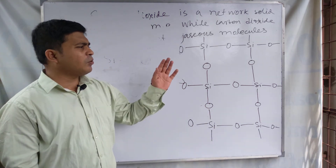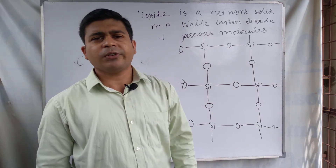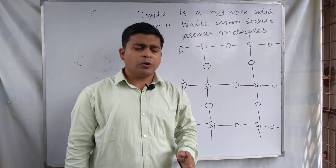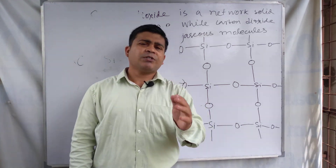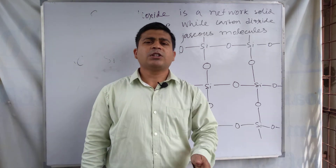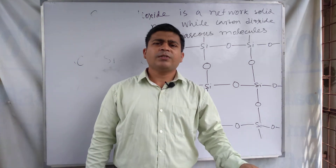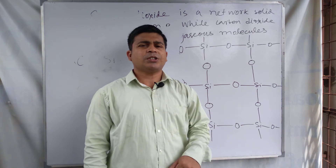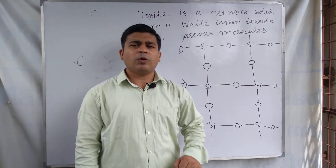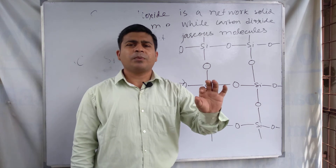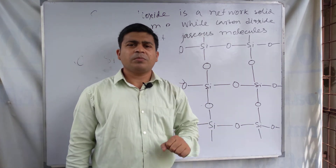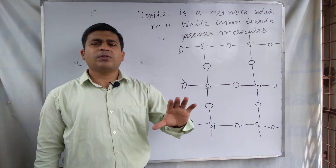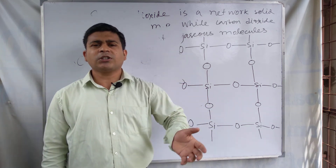This is the discussion about the structural differences between carbon dioxide and silicon dioxide. You can also write the same answer for the question: what are the differences between the structures of CO₂ and SiO₂? Silicon dioxide forms a network structure, while carbon dioxide contains discrete molecules because the p orbitals of carbon and oxygen overlap to form pi bonds. Silicon is larger in size, so it cannot form this type of structure.